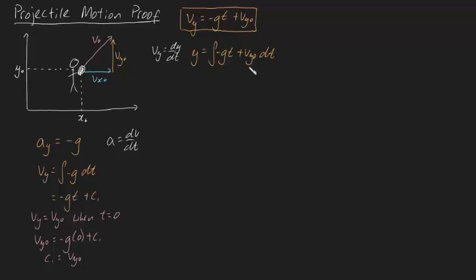Now this is a fairly simple integral as well, because g is constant, vy0 is constant, so this just turns into minus a half gt squared plus vy0t plus another integrational constant c2. Now how do we solve this integrational constant? You've guessed it, initial conditions.